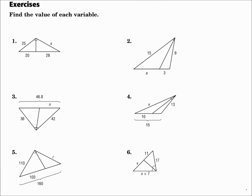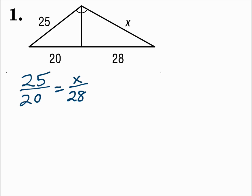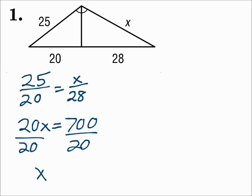Find the value of each variable. Number one. Here you have a triangle with the angle bisector — you can see that angle cut in two. The rule says that the side that the bisector intersects is cut into lengths proportional to the remaining two sides. Pair things up the way they sit in the picture: on the left, 25 over 20; on the right, x over 28. Cross multiply and solve — x is 35.